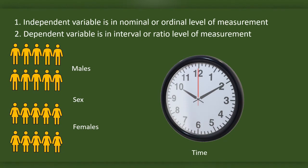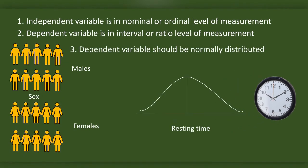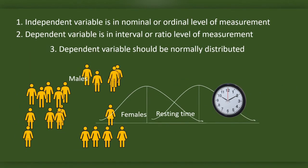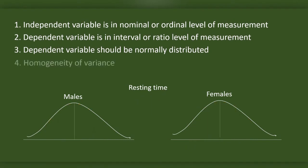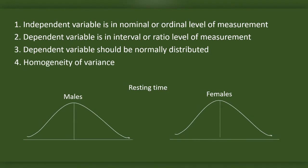The dependent variables should be at the interval or ratio level of measurement, or they should be continuous variables. One example of a dependent variable can be resting time. The dependent variable has to be normally distributed. We will categorize dependent variable scores based on the independent variable — here the two categories are resting time of males and resting time of females.